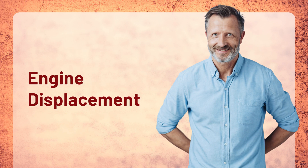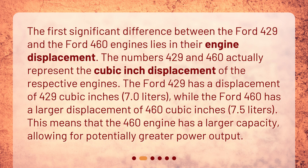Engine Displacement. The first significant difference between the Ford 429 and the Ford 460 engines lies in their engine displacement. The numbers 429 and 460 actually represent the cubic inch displacement of the respective engines. The Ford 429 has a displacement of 429 cubic inches — 7.0 liters — while the Ford 460 has a larger displacement of 460 cubic inches, 7.5 liters. This means the 460 engine has a larger capacity, allowing for potentially greater power output.